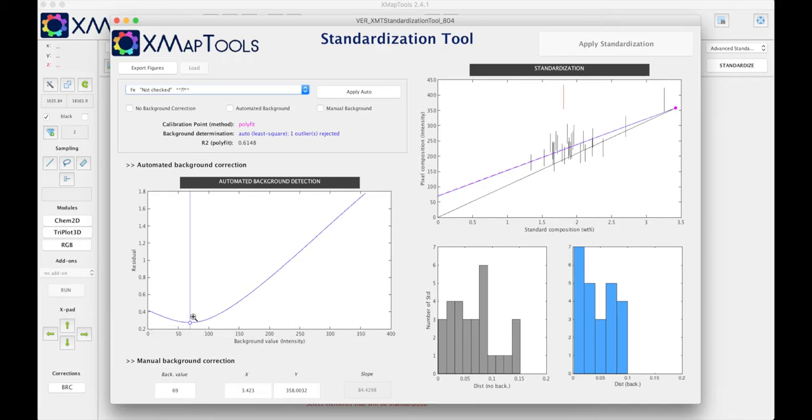It can help you to define where is the optimal background value. Those two diagrams show the distribution of the residuals with the distance, so the distance to the points compared to the number of standards.